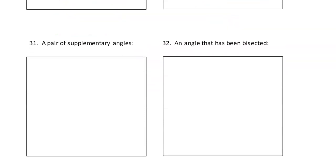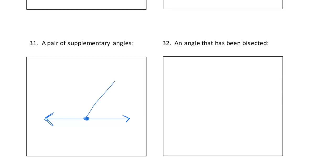Let's move on to supplementary angles. For supplementary, you have to think straight. Draw a straight line, here's the vertex in the middle, and draw in an extra ray — that means angle 1 and angle 2 are supplementary, because they add up to 180.